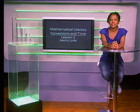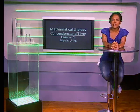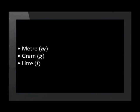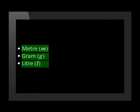Metric units are the units of measurement used in South Africa. The metric system consists of three basic units. These are meter, gram, and liter.